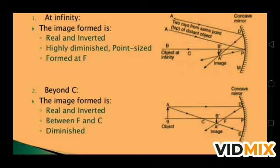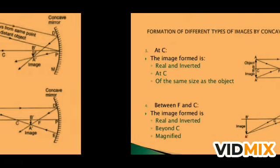The image formed when the object is beyond C: the image is real, inverted, and diminished — diminished means small. So when the object is beyond C, the image is formed between F and C, and its properties are real, inverted, and diminished.